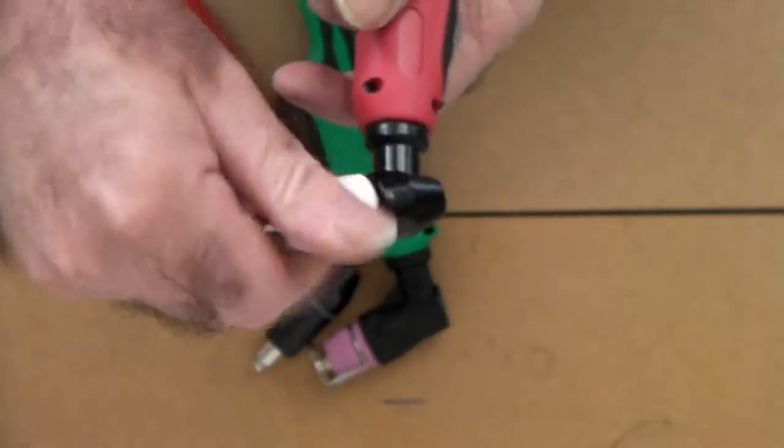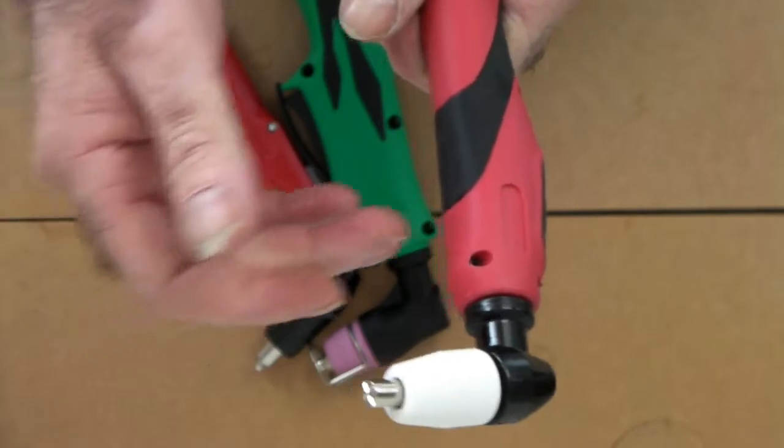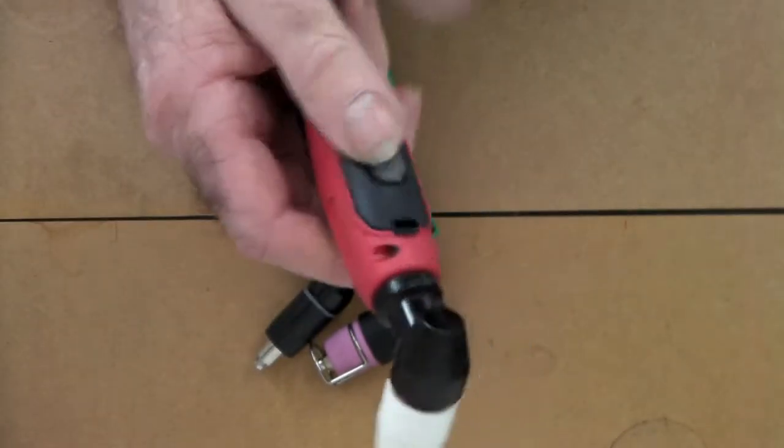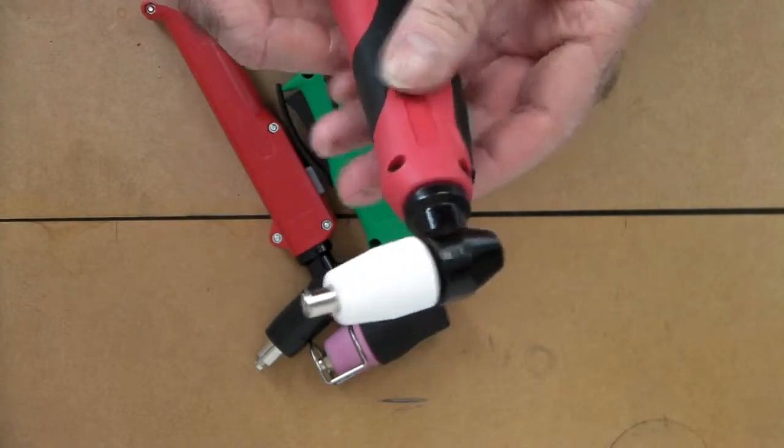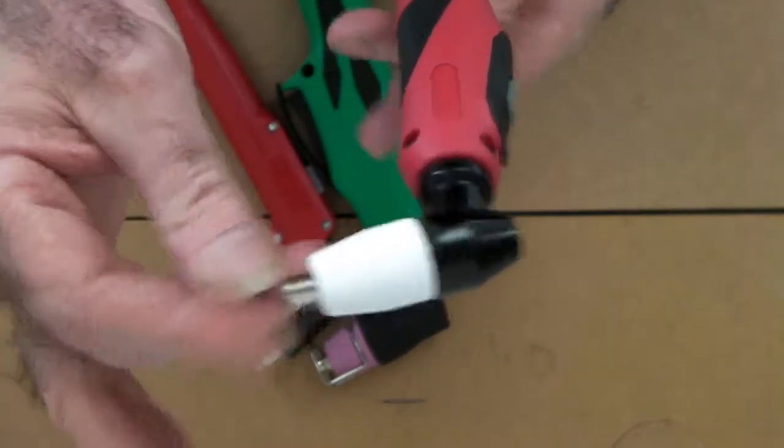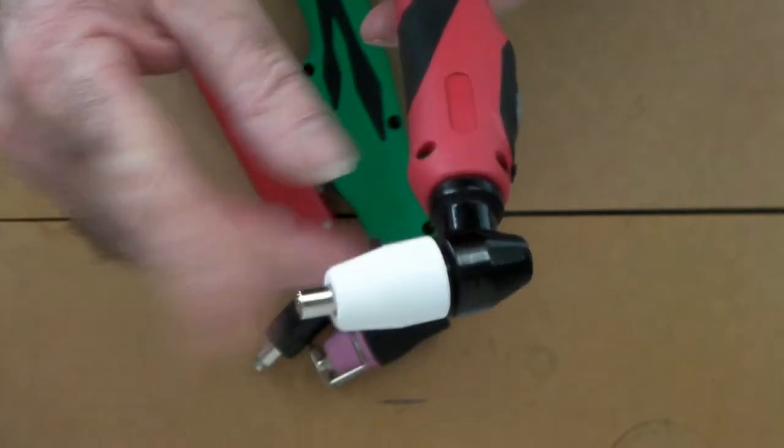This is the PT-31 torch and this is interchangeable with any small plasma cutter under 50 amp as long as it's HF start. This is the one I use and this is about the cheapest of the whole lot with the consumables and all the stuff like that.